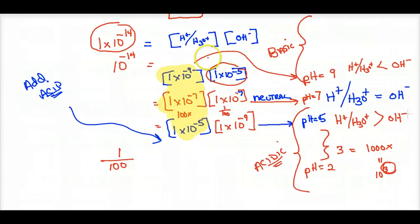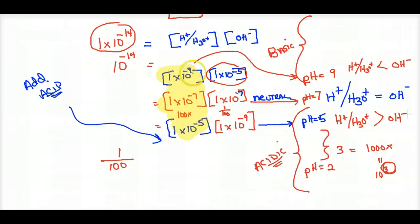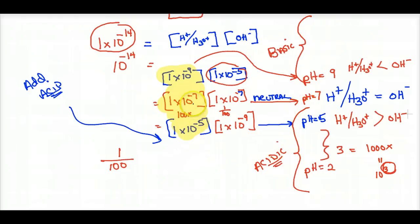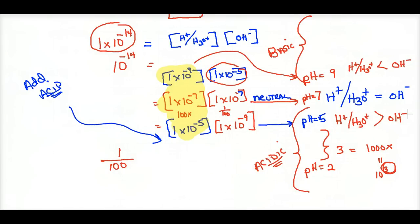When you add a base, it increases the hydroxide concentration and your pH rises, because the H⁺ concentration gets smaller as OH⁻ gets bigger. Anything above 7 is a basic pH with more hydroxides; anything less than 7 means more H⁺ or H₃O⁺. Acids and bases affect the pH accordingly.